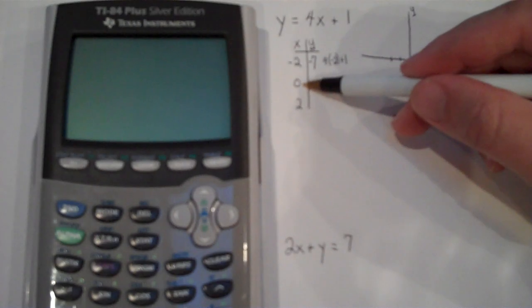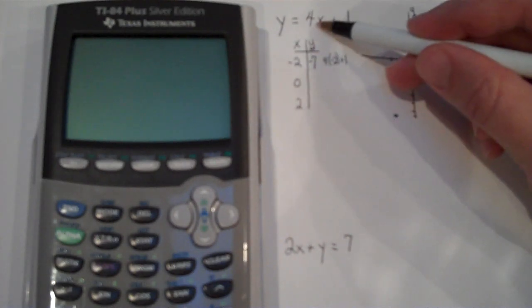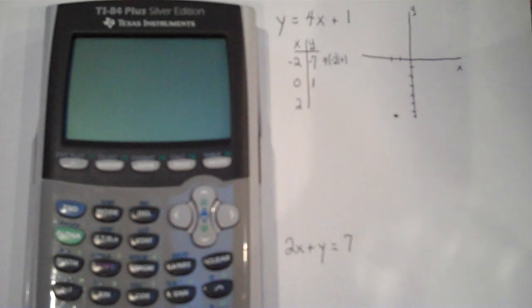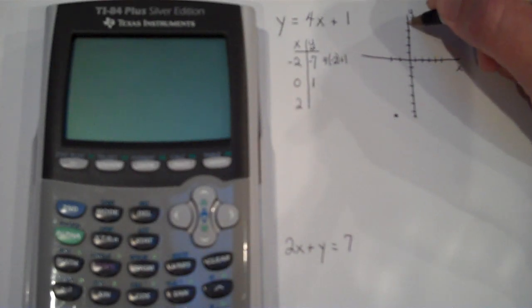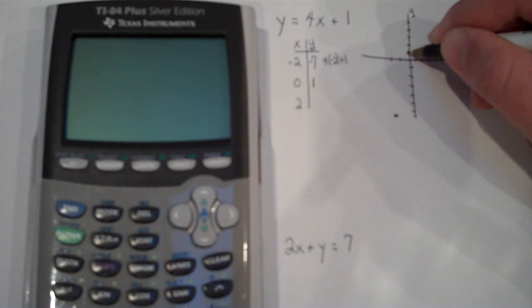If my input is 0, 4 times 0 is 0 plus 1, that gives me an output of 1. So kind of doing this out of order here, but I'm just going to add some more tick marks. So 0, 1 is here on the Y-axis.